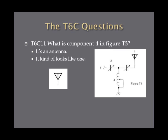What is component four in figure T3? If you look at figure T3, component four looks like a triangle upside down with a line through it. This is an antenna. You will see these on circuits for receivers or transmitters, and it kind of looks like an antenna if you think about it. So just remember that symbol is an antenna.